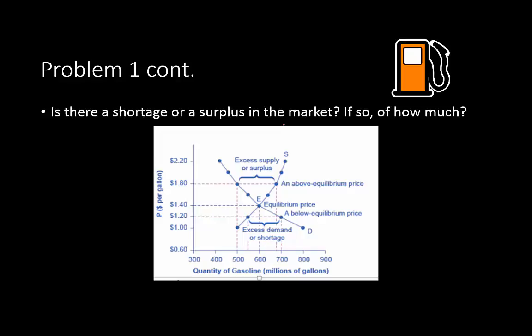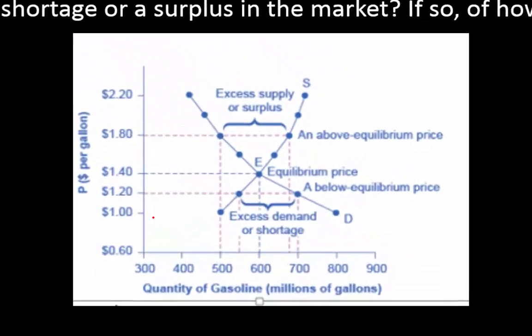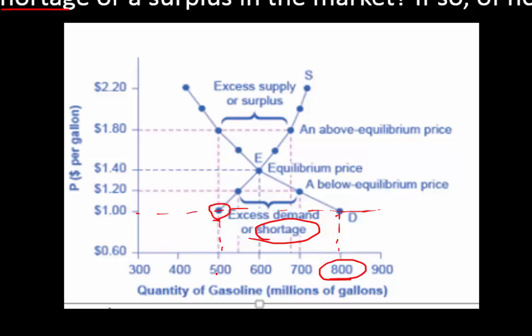Is there a shortage or a surplus in the market, and if so by how much? We can see on our graph there is excess demand, which is a shortage. Going down to a dollar we have more excess demand — yes, we do have a shortage. Looking at demand right here at 800, and supply at 500, the distance between supply and demand is the shortage. Quantity demanded is 800, quantity supplied is 500, and the difference is 300. So that is our shortage.